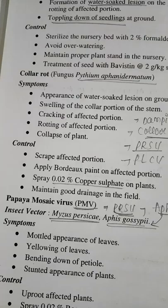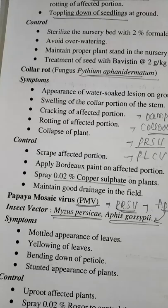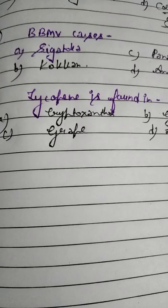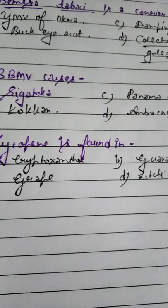Leaf spot or Sigatoka disease of banana is caused by Mycosphaerella musicola. Panama disease or Panama wilt is caused by fungus Fusarium oxysporum. In Papaya, there is an important disease called damping off caused by Phytophthora species and Pythium species. The insect vector of Papaya Mosaic Virus is Myzus persicae or Aphis gossypii — please remember the vector of Papaya Mosaic Virus.